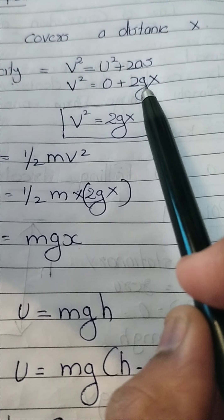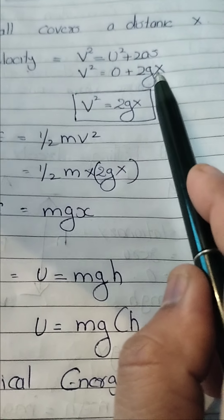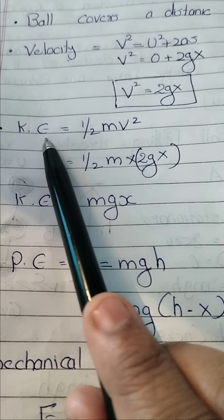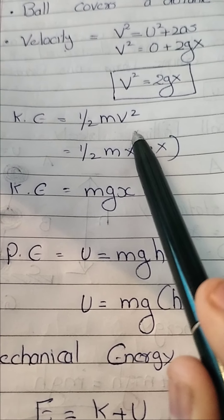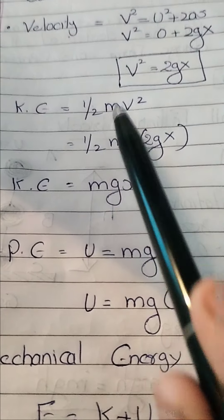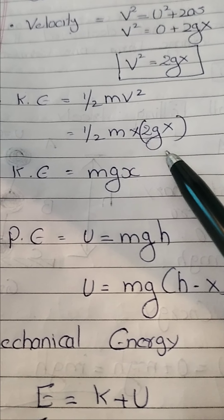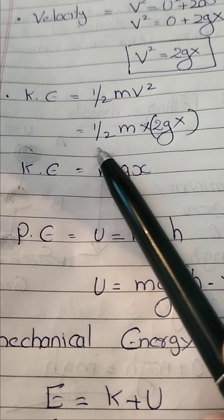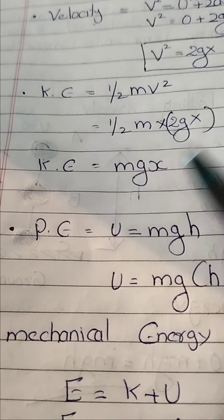The kinetic energy at point B is half mv squared. Substituting v squared equals 2gx, we get kinetic energy equal to half m times 2gx. Simplifying, the 2 and 2 cancel, giving kinetic energy equal to mgx.